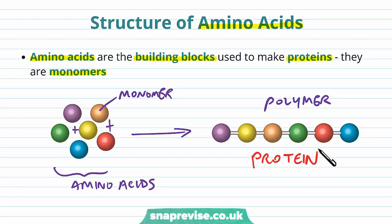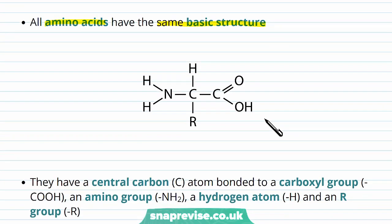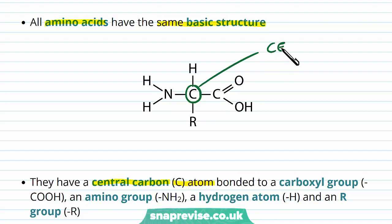A polymer of amino acids is always known as a protein. So proteins are polymers of amino acids, and all amino acids — regardless of which one — all have the same basic structure. All amino acids have a central carbon atom right in the middle, and this central carbon is attached to various different things.